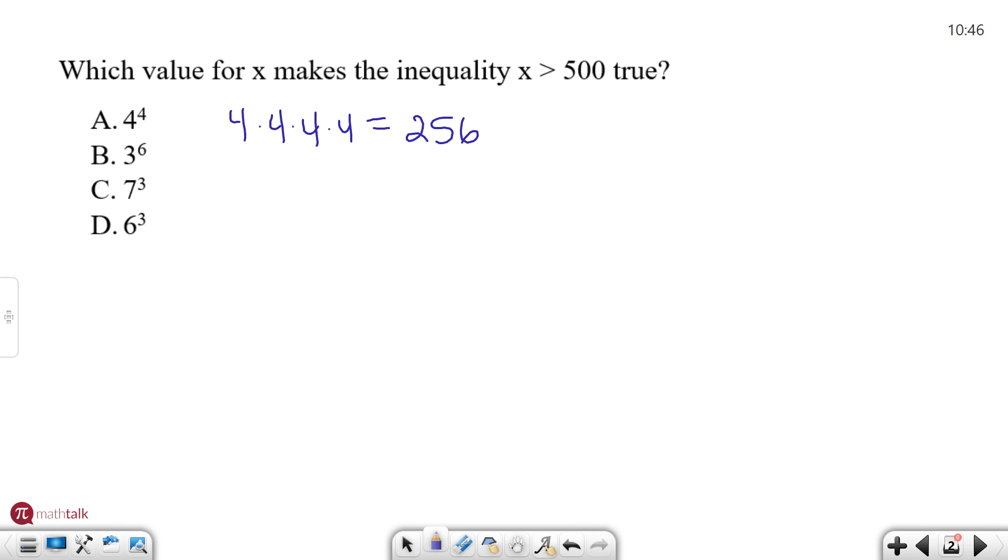3 to the sixth is a lot of threes. That's six of them right there. And if you multiply that out, you're actually going to get 729, which right there is bigger than 500, so that means it has to be your answer. So you can just stop right there because you know that your answer should be B.